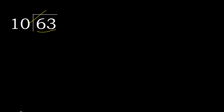63 divided by 10. 6 is less, therefore next, 63 is not less, therefore with 63. 10 multiplied by which number is nearest to 63 but not greater? 10 multiplied by 7 is greater, so multiply by 6. 60 is not greater.